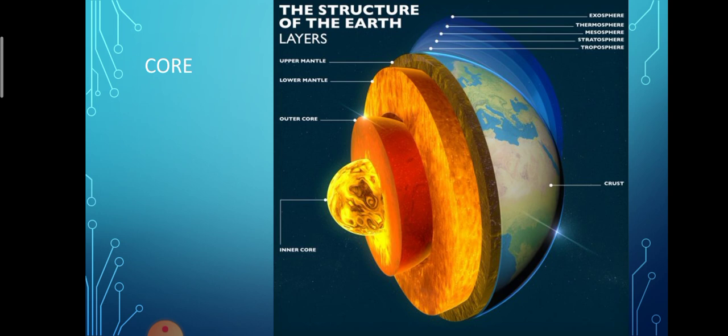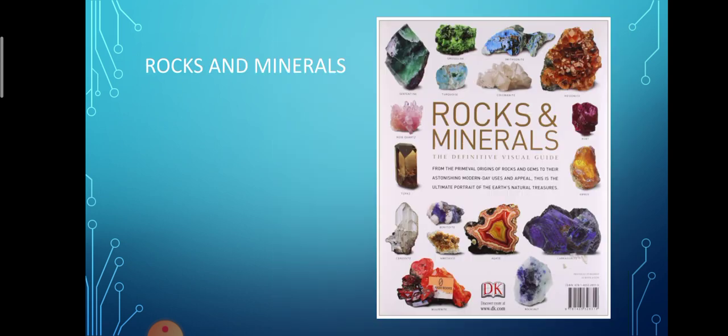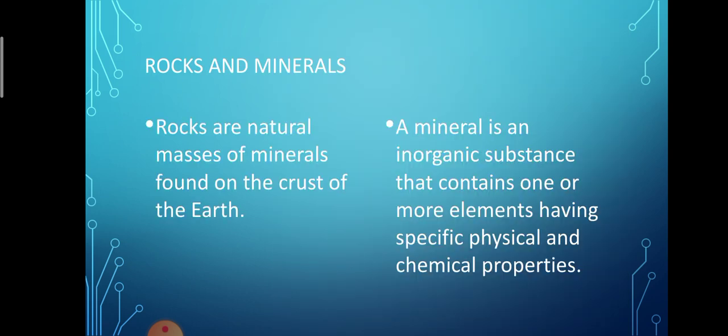Though temperatures here are the highest, the pressure of the overlying layers keeps the rock in the solid state. So this is all about the three layers of earth. Our next topic in the chapter is rocks and minerals. Rocks are natural masses of minerals found on the crust of the earth, and the earth's crust comprises numerous types of rocks and minerals.